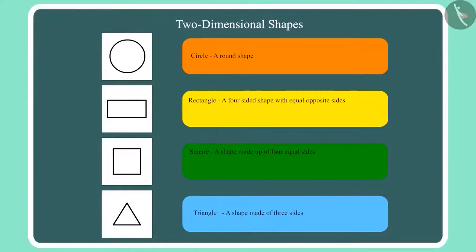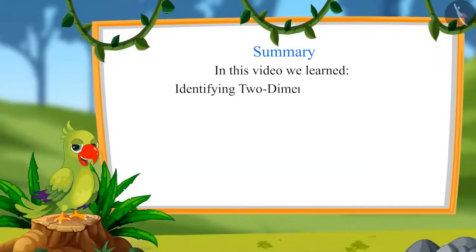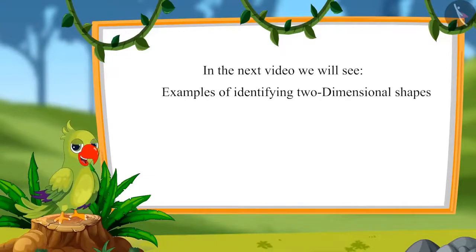Children, today we recognized a few two-dimensional shapes and their names: we call this round shape a circle; the four-sided shape with equal opposite sides is called a rectangle; the shape with four equal sides is called a square; and the shape with three sides is called a triangle. That was all for today. In this video, we learned identifying two-dimensional shapes. In the next video, we will see examples of identifying two-dimensional shapes. Till then, bye children.